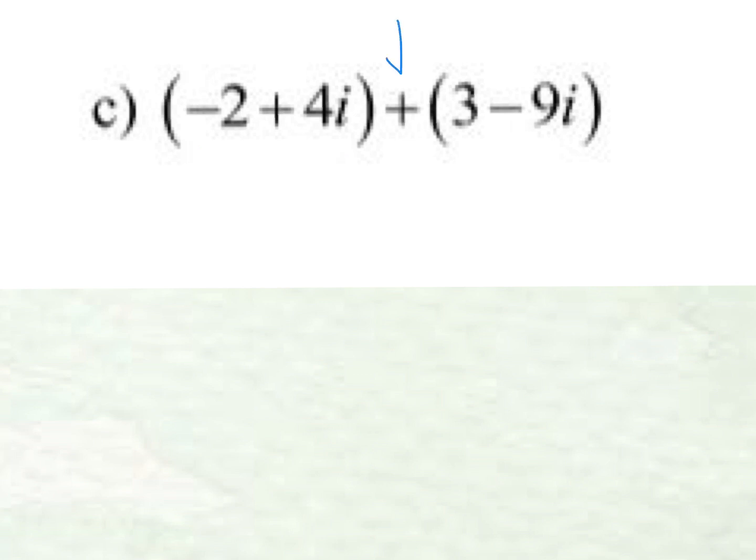Again, I know that I have an addition problem because there's a plus sign here. If I were to combine these terms, I have a real negative 2 and a real 3. So those are going to combine to give me a 1. And then I have a 4i combined with a negative 9i. So those are going to combine to give me a negative 5i.